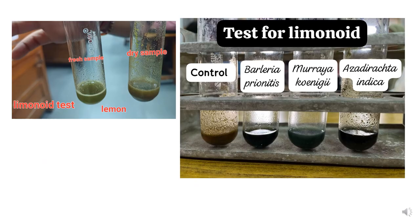You can see some of the results performed for the limonoid test. In the first picture, the test is performed on lemon and two samples are taken: a fresh sample and a dry sample. You cannot see any blue-green color here. These are aqueous extracts of fresh leaves and dry powdered leaves, and no blue-green color appeared in the aqueous extract.